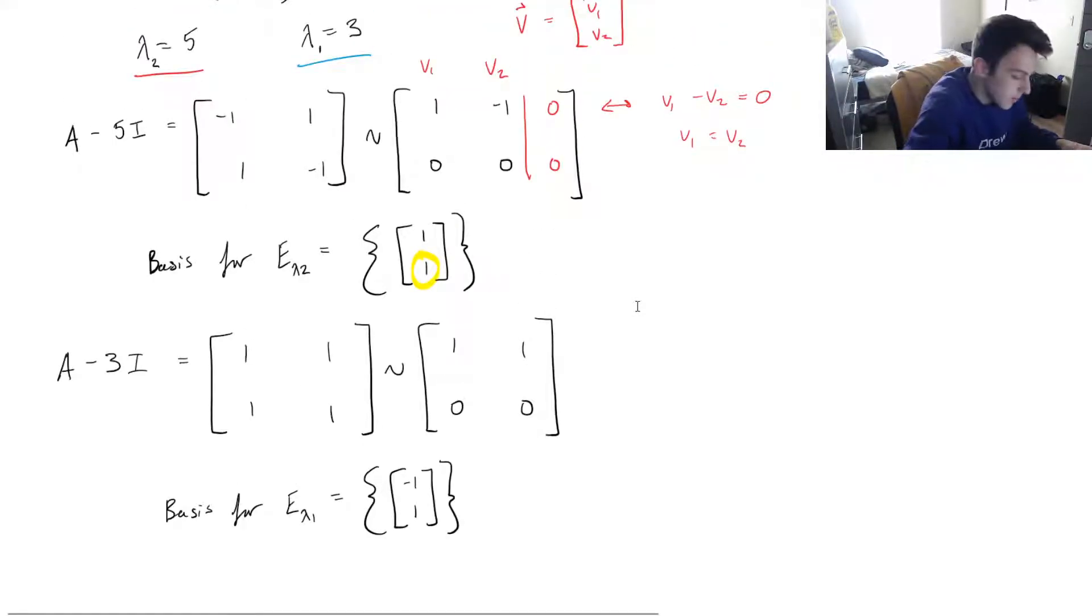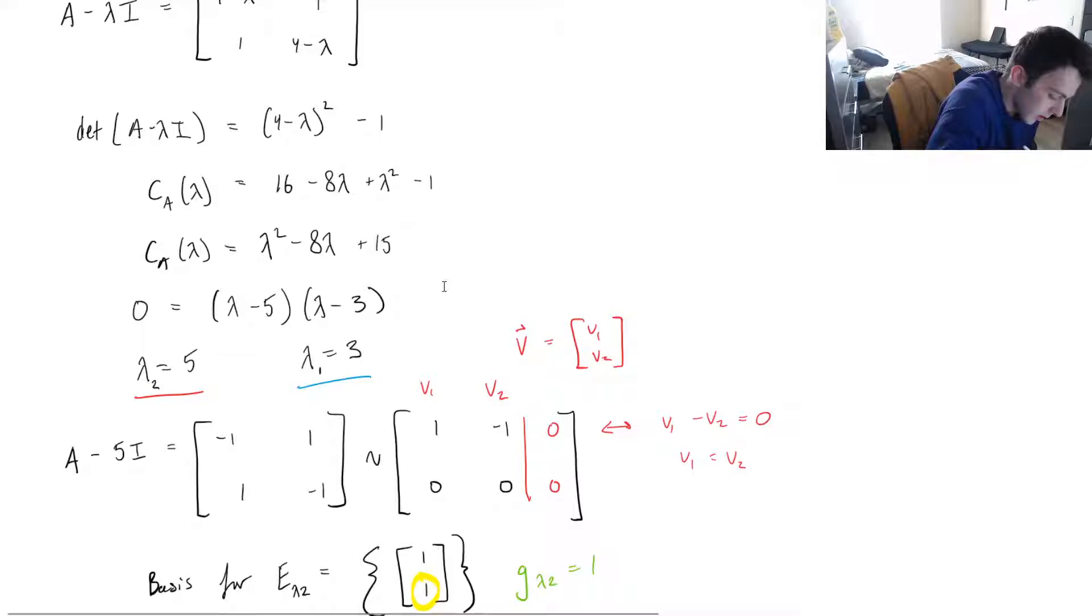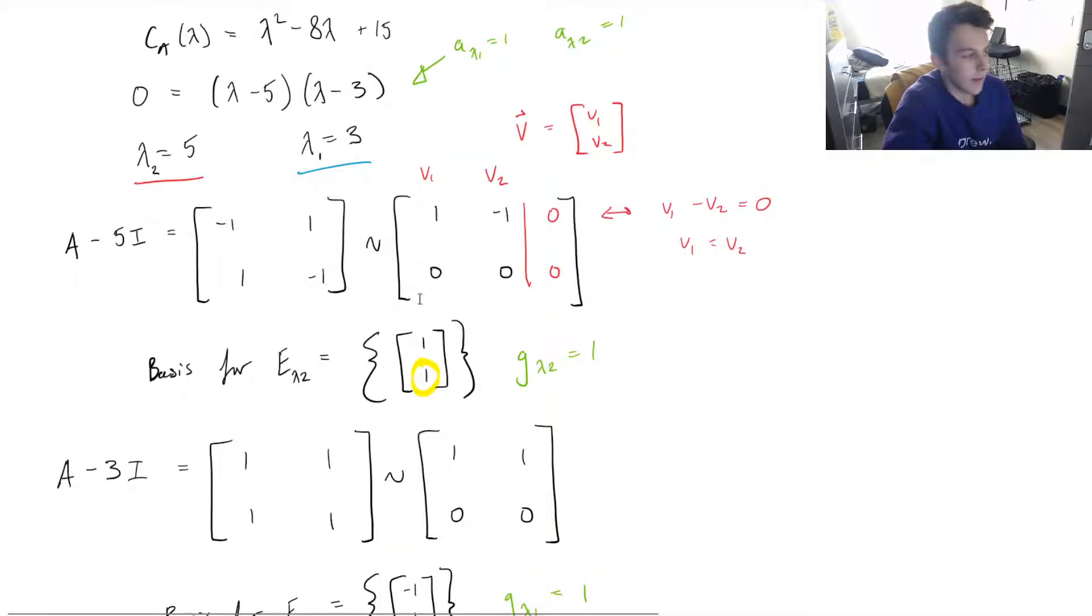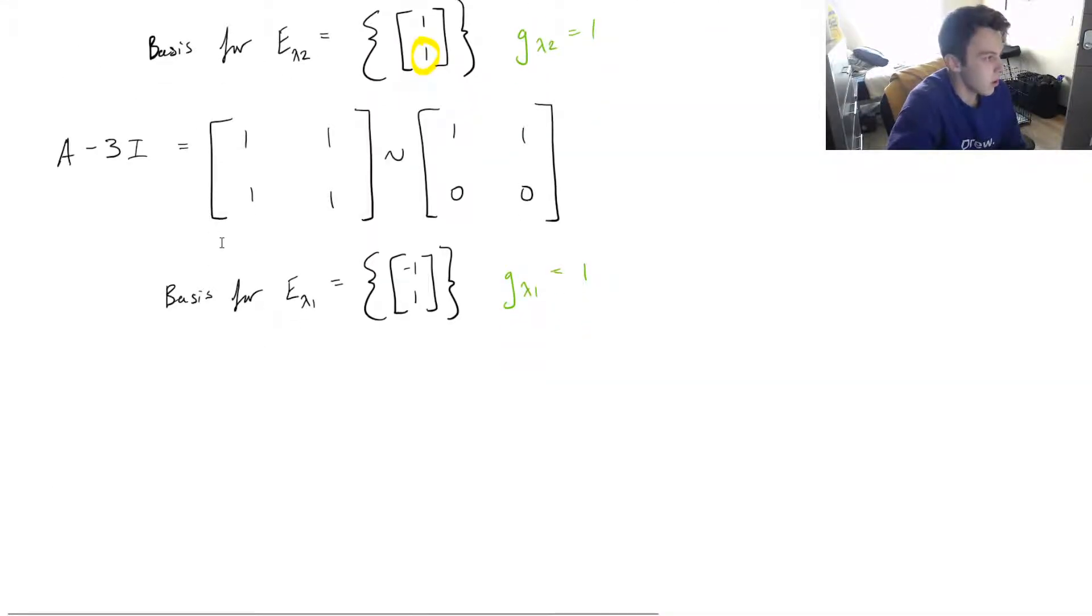And something that I just want to point out, notice how the geometric multiplicity of lambda 2 is equal to 1 because the dimension of our eigenspace that corresponds to lambda 2 is 1. We can say the same thing about lambda 1. We only have one vector in the basis for the eigenspace that corresponds to lambda 1, so the geometric multiplicity is 1. And notice how the algebraic multiplicity of both of these roots is 1 as well because they only repeat once. So since these algebraic and geometric multiplicities are equal to each other, that means we have a diagonalizable matrix.